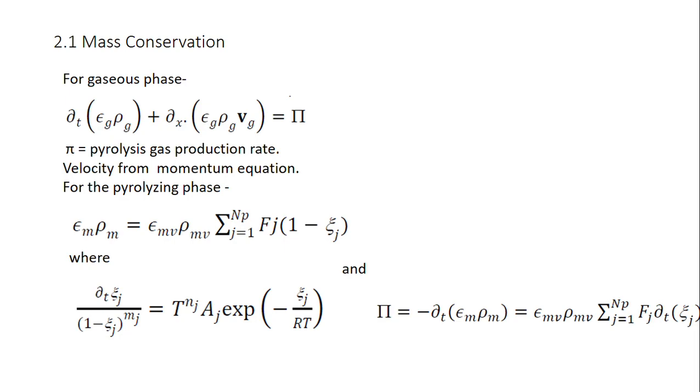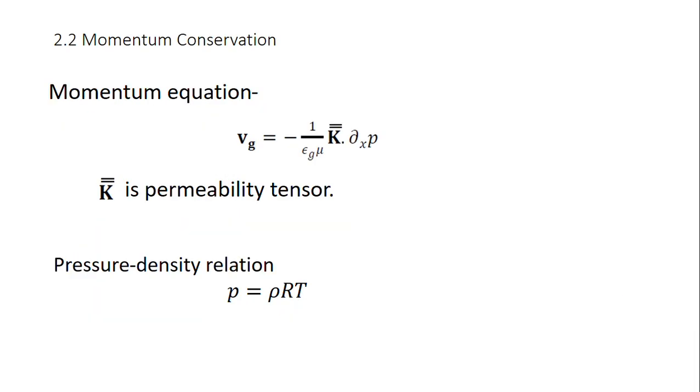The next equation is for the density of matrix, where mm subscript is for matrix and mv for virgin material, which is dependent on ζ. ζ is calculated through this ordinary differential equation as shown, and can be used to calculate φ. Then we have our momentum conservation equation.